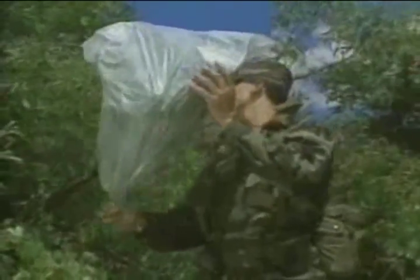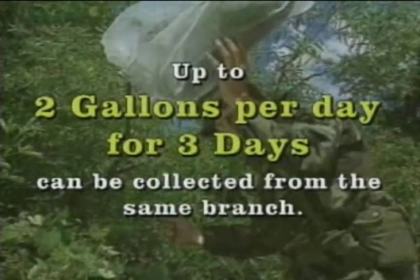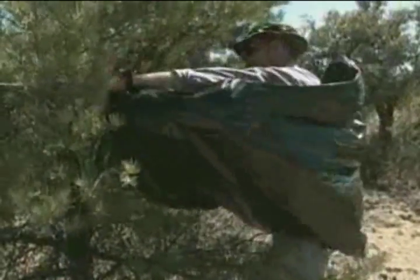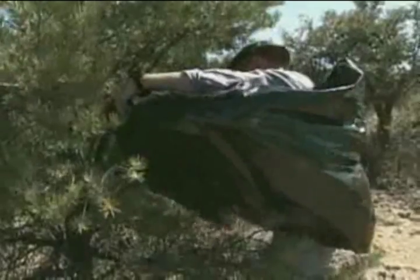This moisture will condense on the inner surface of the bag during the cool hours of the night. The amount of water obtained will depend on the density of the foliage. Up to two gallons of water per day for three days can be collected from the same branch. Bushes or deciduous and coniferous trees will all produce palatable water in sufficient amounts to sustain life.